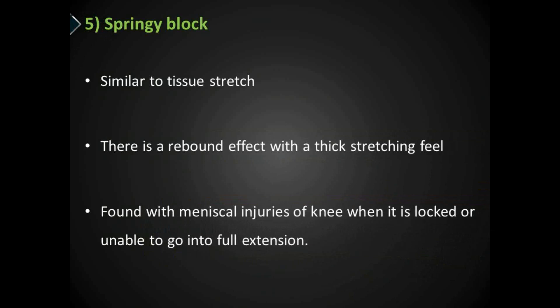The last is springy block, which is again similar to tissue stretch — when you are stretching a soft tissue like a capsule, ligament, or tendon, you get a firm end-feel. Here also it is a firm end-feel, but there is a rebound effect with a thicker stretching quality, found with meniscal injuries of the knee when it is locked and unable to go into full extension. When you apply pressure, the knee goes into extension. When you release, it comes back to some degree of flexion — giving a springy rebound effect. That is called a springy block.